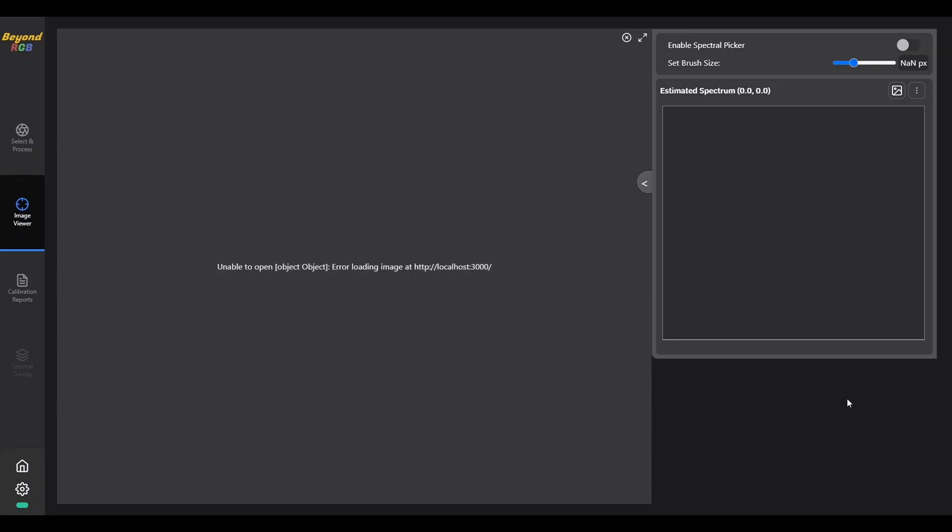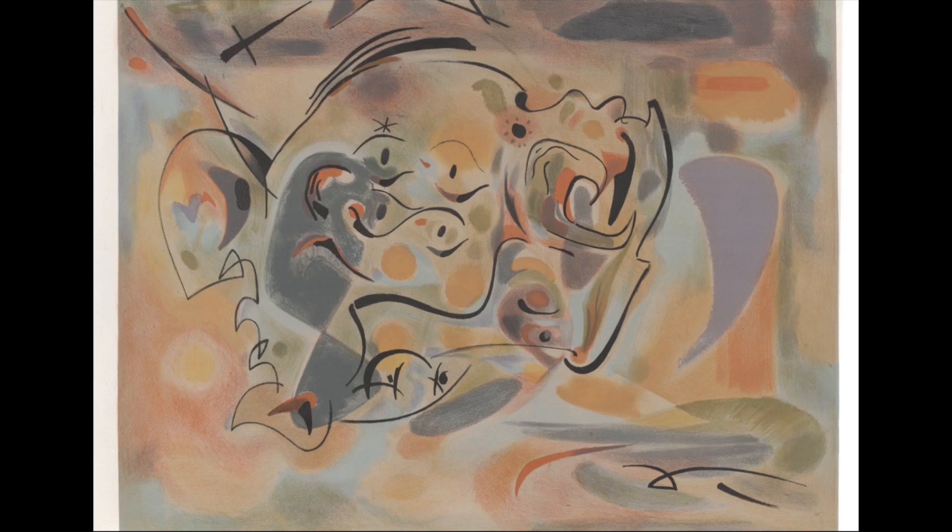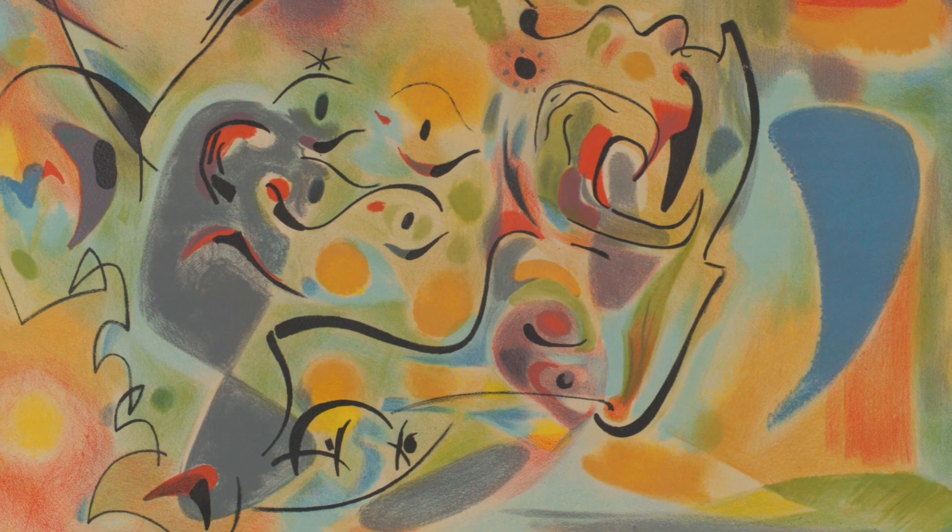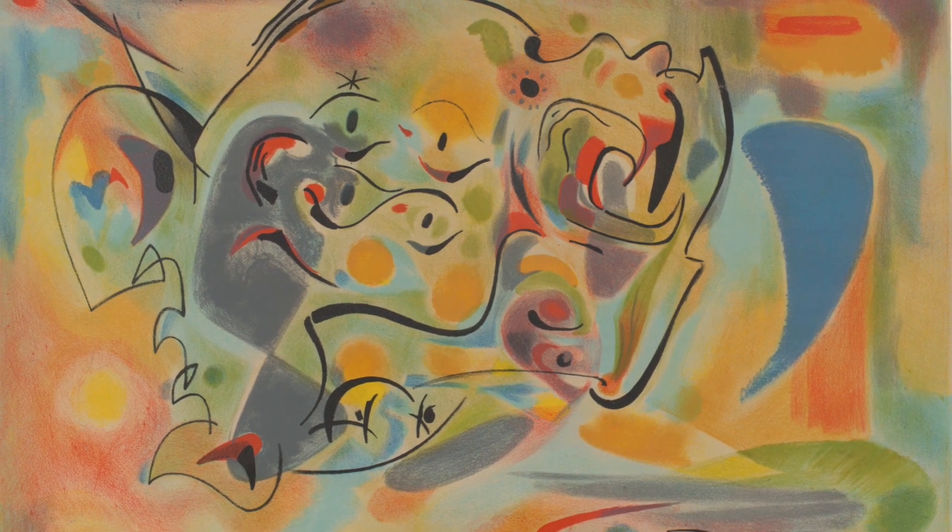Simply take images of a given artwork, dark field, light field, and color targets, each under two different lighting conditions, and input each image into the software. The result will be an uncompressed image of the artwork, color calibrated, and as accurate to the original as possible.